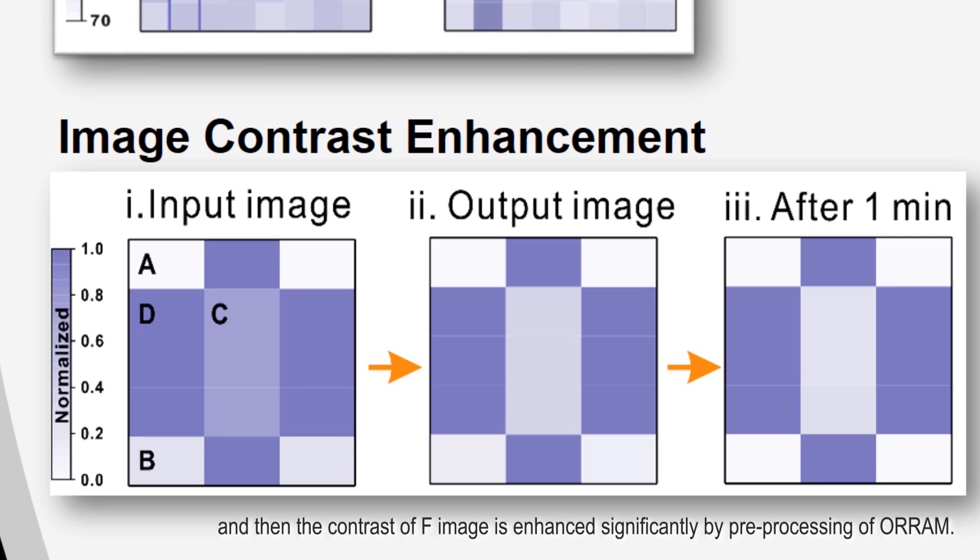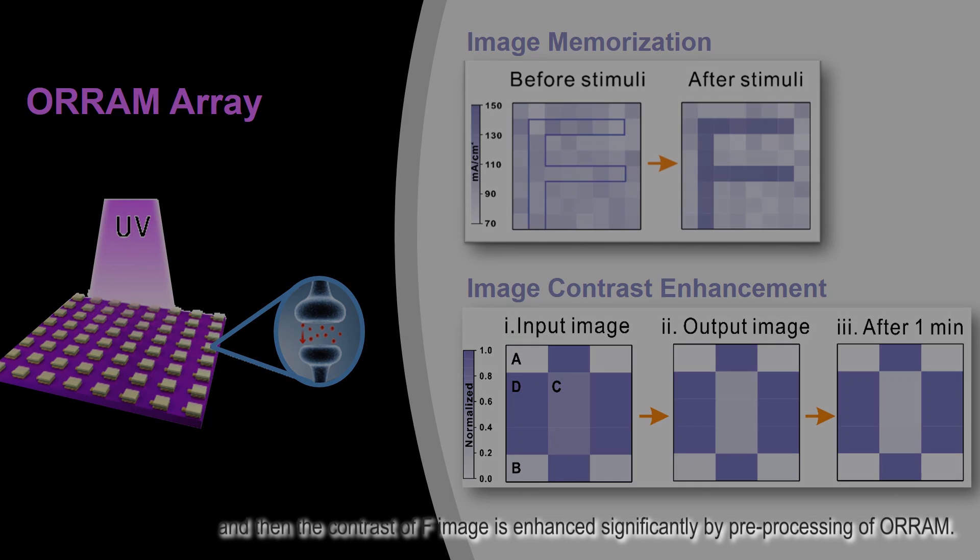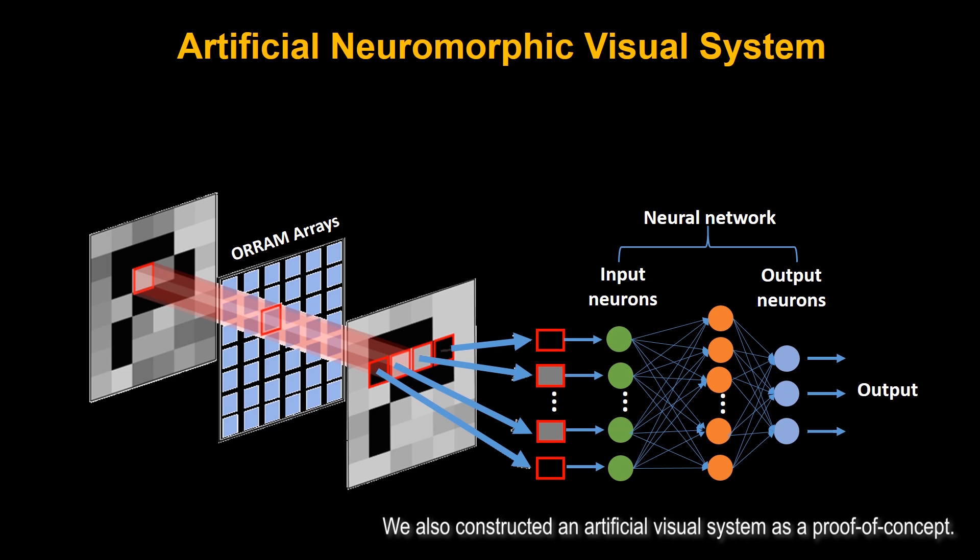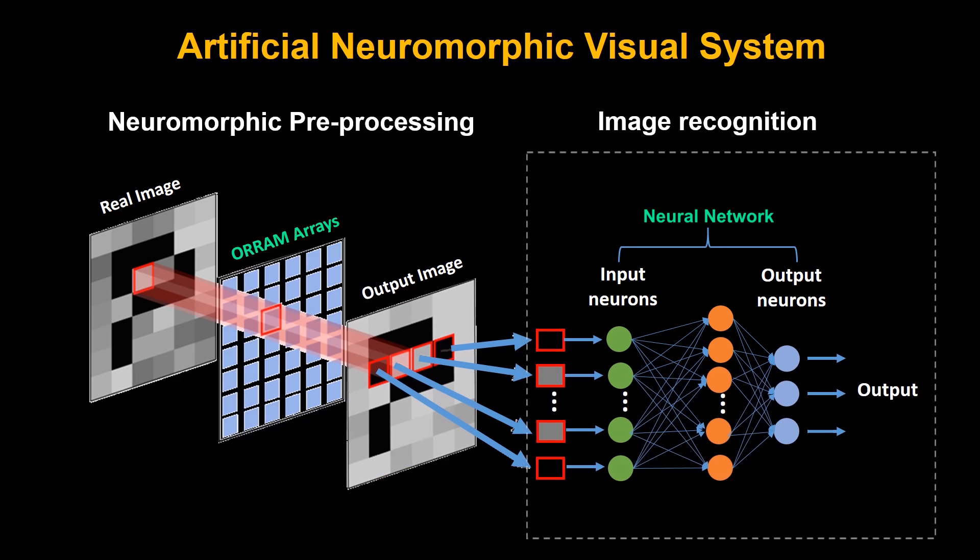We also constructed an artificial visual system as a proof of concept. It consists of two parts: ORRAM arrays and image recognition through neural network.